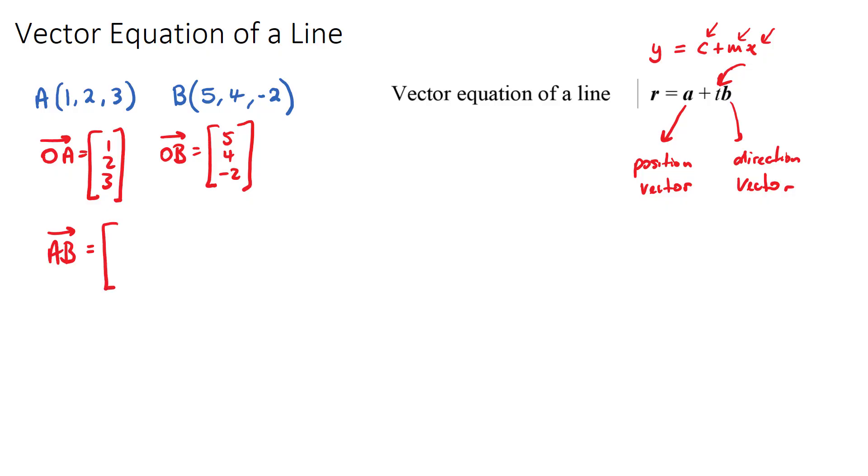Now AB is just the journey from A to B. You can use your vector addition and subtraction here by going OB minus OA, and we can solve for that. Or it's just as simple as thinking, how do we get from 1 to 5? Well, we go positive 4 units. How do we go from 2 to 4? Positive 2. How do we go from 3 to negative 2? We'd go down 5. So that is going to be the journey from A to B.